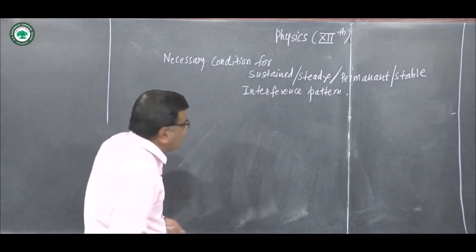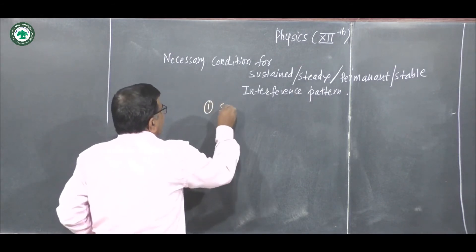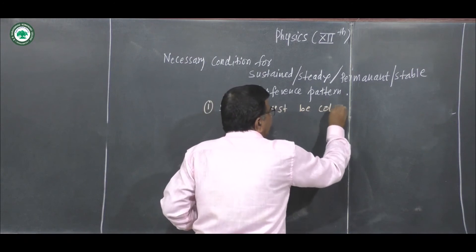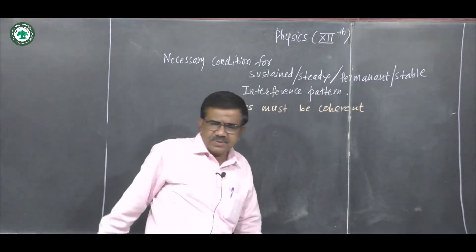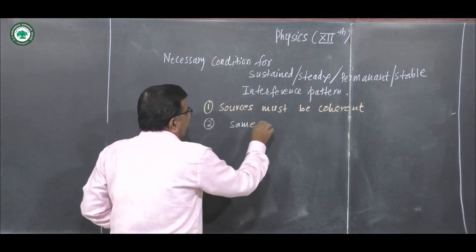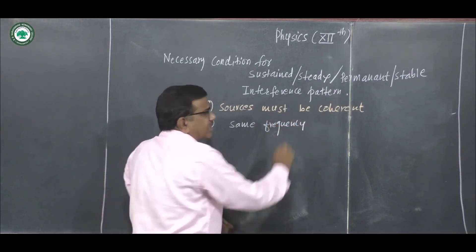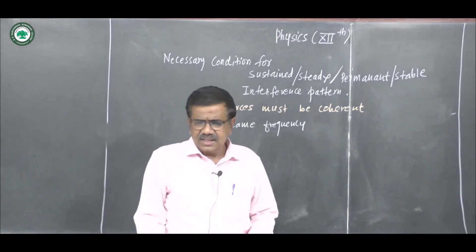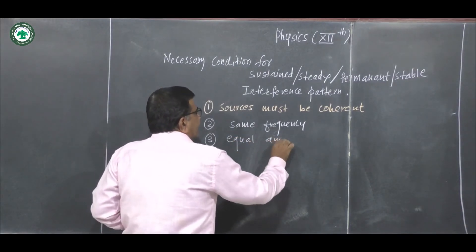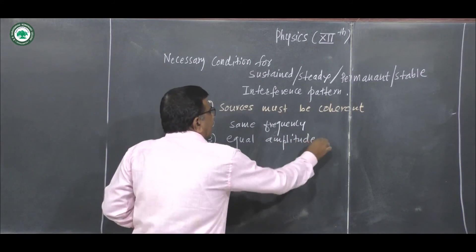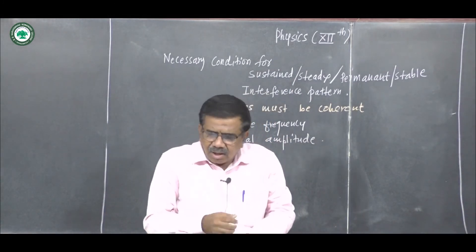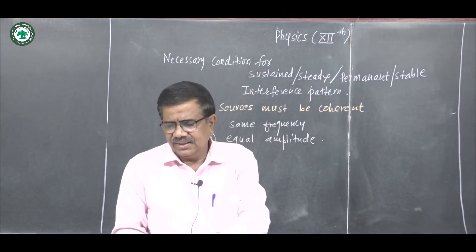The main conditions are: the two sources must be coherent, they must have the same frequency, and they must have equal amplitude. If these conditions are satisfied, the interference pattern is steady, permanent, or stable.